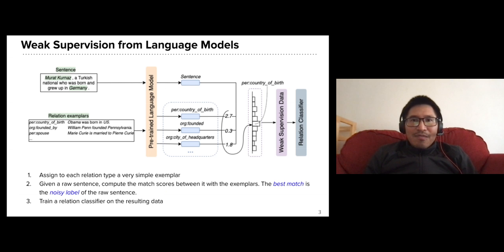Okay, so firstly, how do we get weak supervision from language models? We follow the current one-shot fashion, assuming that we have a set of predefined relation types and a single very simple example for each relation, such as Obama was born in the US for the relation type born in. We use a language model to find the best match of a given sentence against relation exemplars.